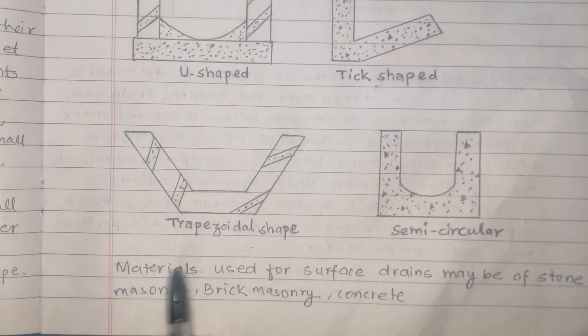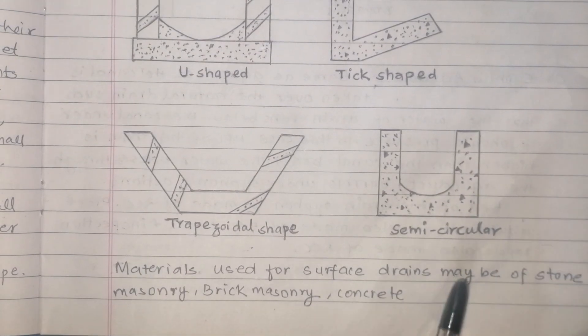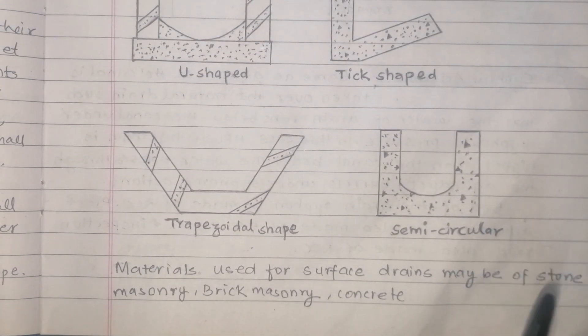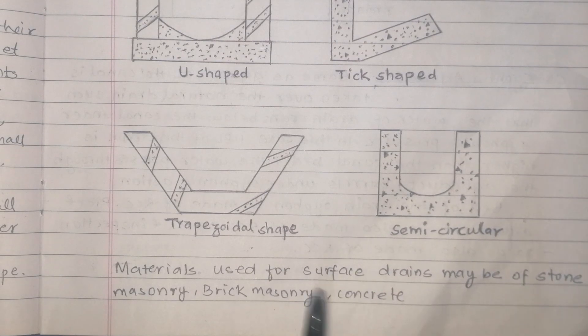The materials used for surface drains may be stone masonry, brick masonry, and concrete.